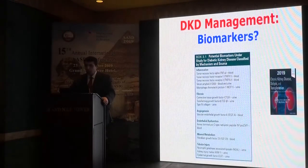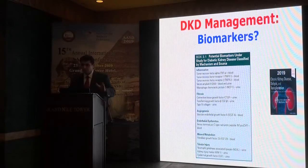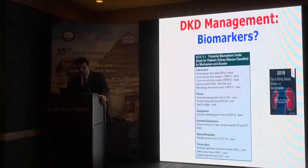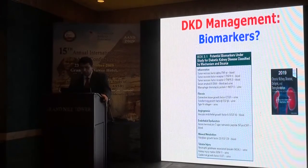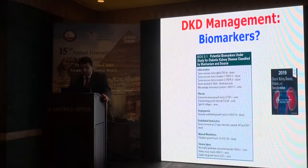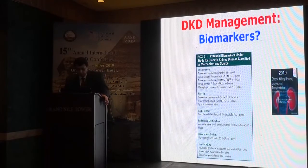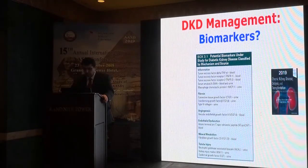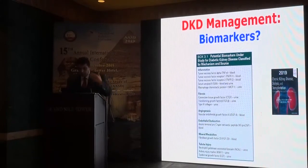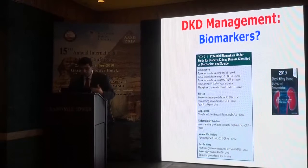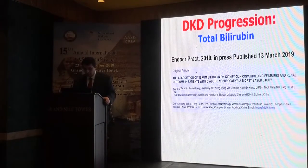Regarding biomarkers: several biomarkers can help detect and follow prognosis and management in diabetic kidney disease. Markers for inflammation include several tumor necrosis factor receptors and soluble factors. For fibrosis: connective tissue growth factor, transforming growth factor beta, and type 4 collagen. For angiogenesis: vascular endothelial growth factor. For mineral metabolism: fibroblast growth factor 23. For tubular injury: NGAL, KIM-1, and epidermal growth factor. These markers allow assessment of the degree of inflammation, fibrosis, angiogenesis, and endothelial dysfunction, enabling proper assessment of the stage of diabetic kidney disease.